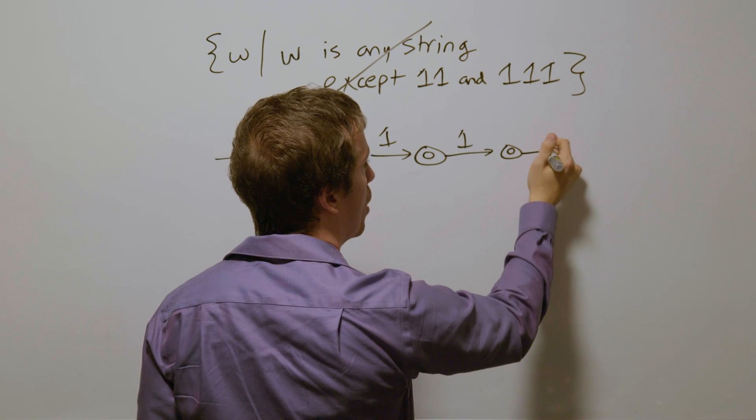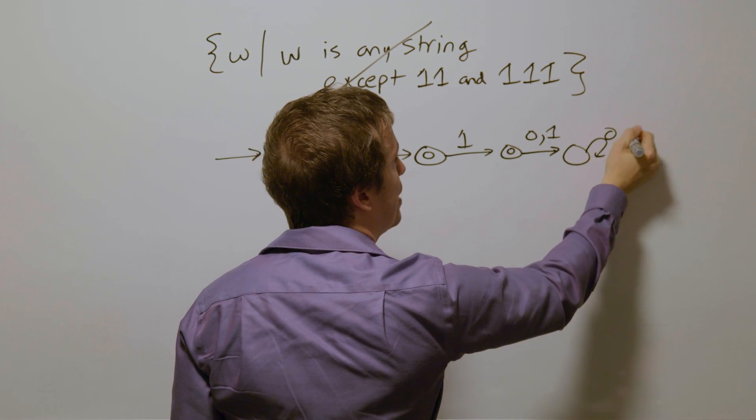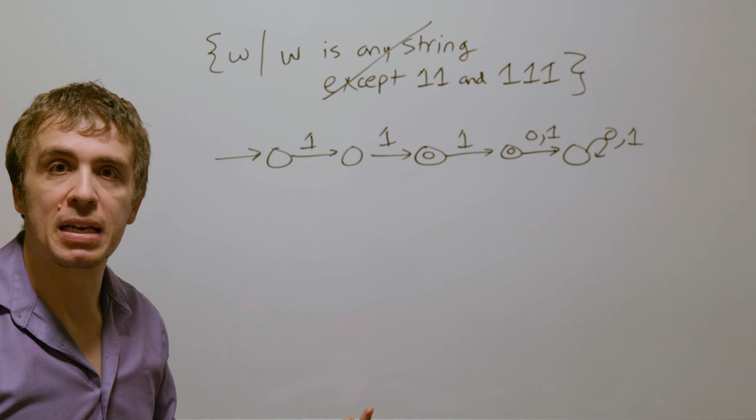So therefore, if I read either zero or one after the fact, it should go to a dead state, which reads through all of the other characters.